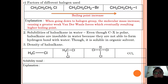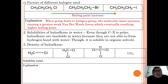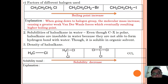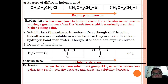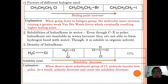Regarding solubility of haloalkanes: even though the C–X bond is polar, haloalkanes are insoluble in water because they cannot form hydrogen bonds with water. They are, however, soluble in most organic solvents. In terms of solubility trend, solubility decreases as the number of chlorine substituents increases, because adding more chloro groups makes the molecule less polar, reducing its ability to dissolve in polar solvents.